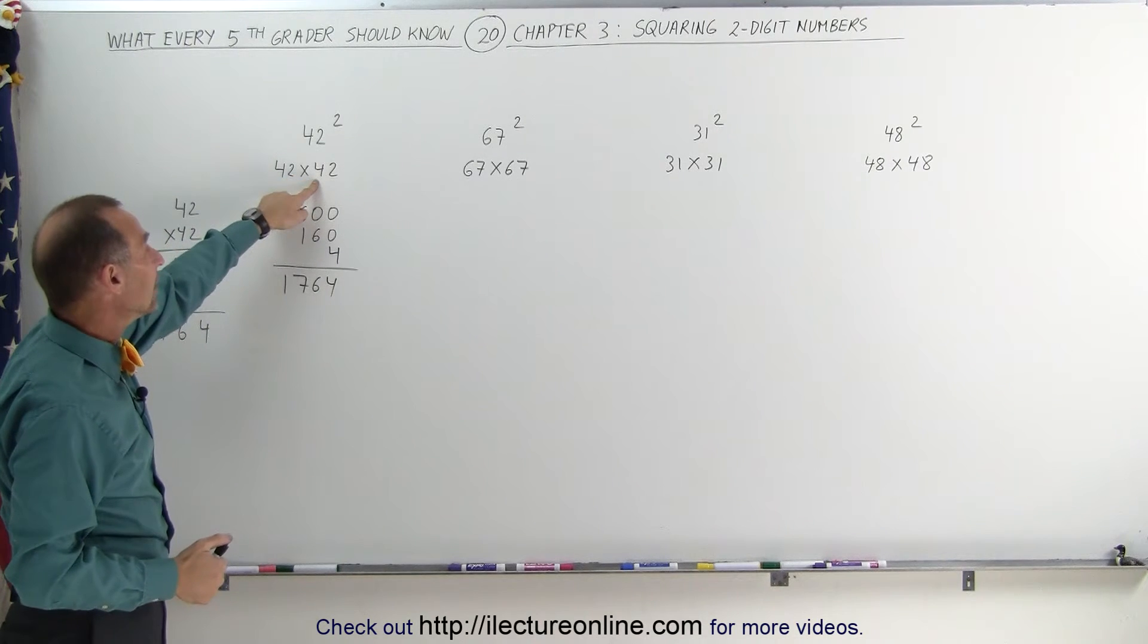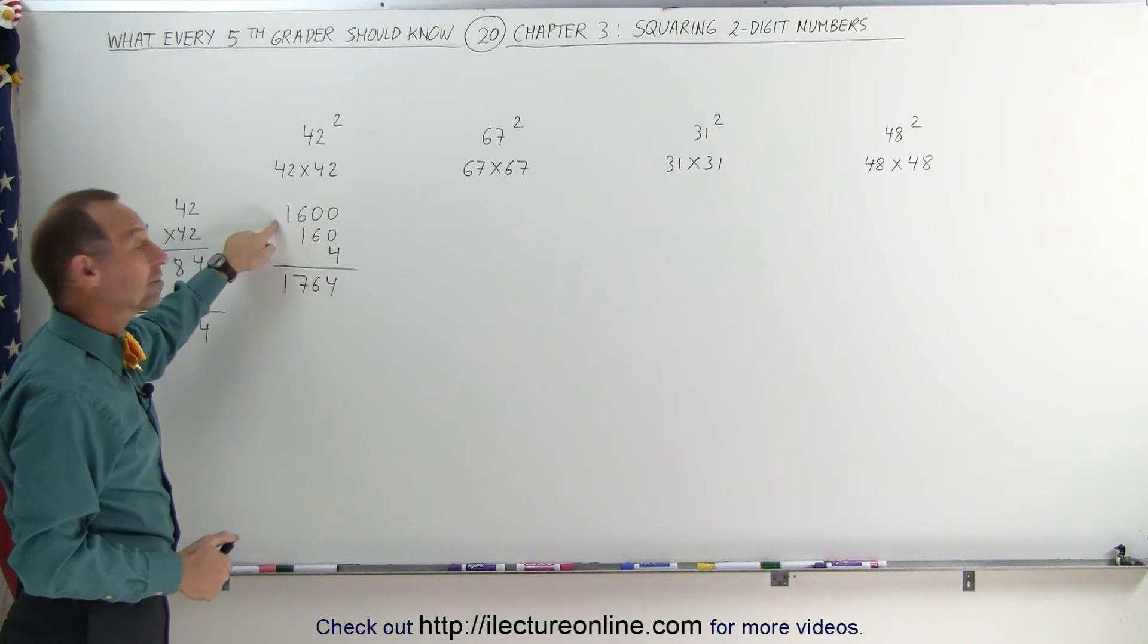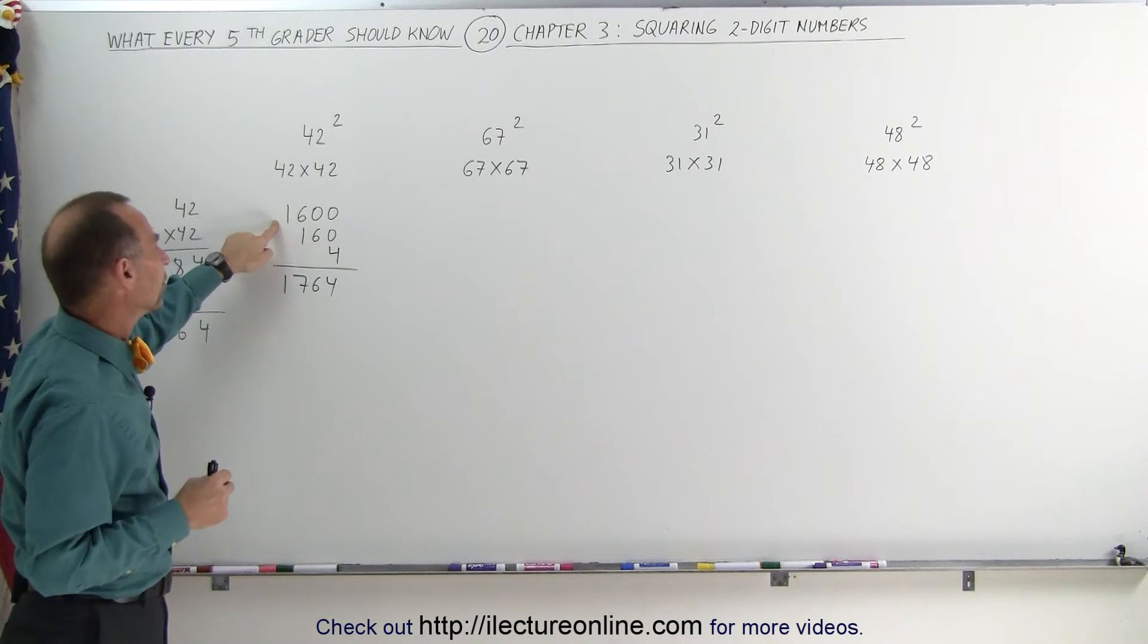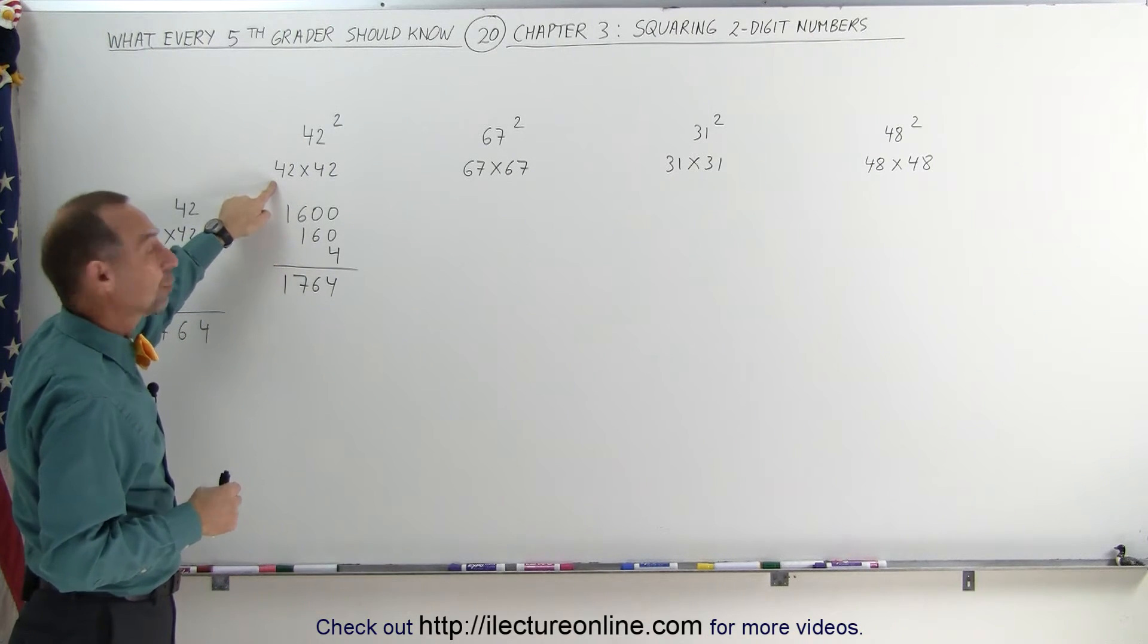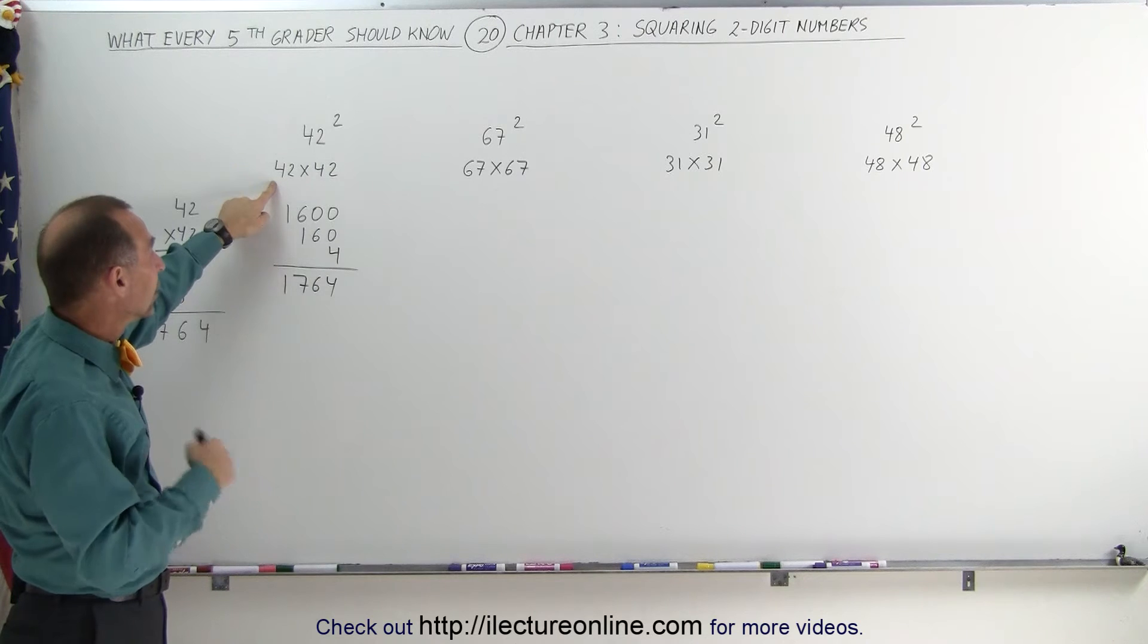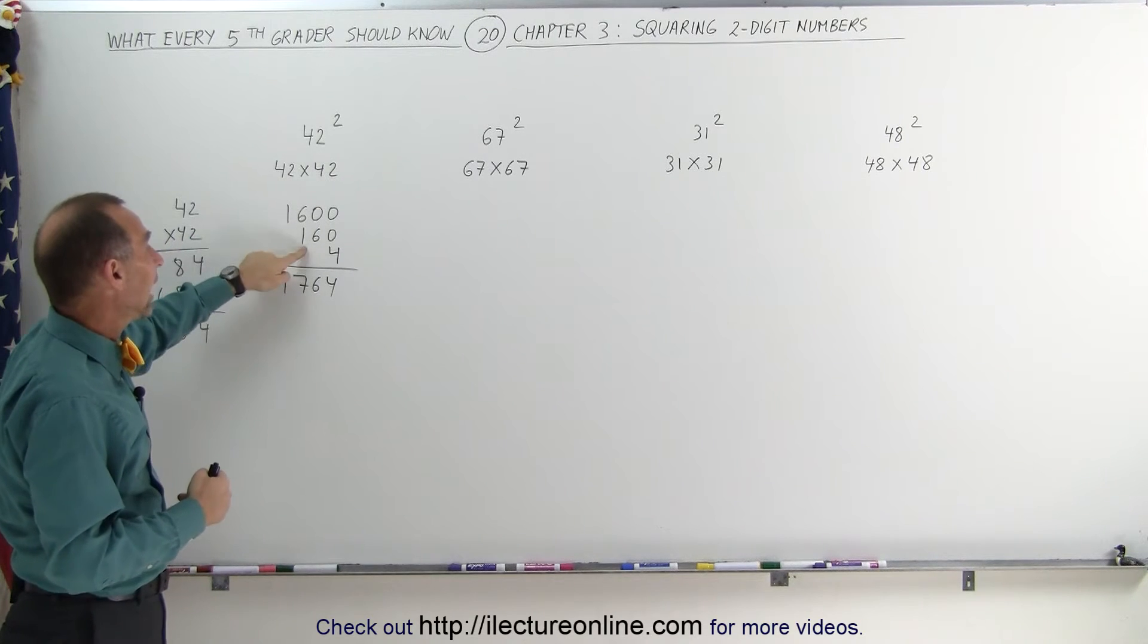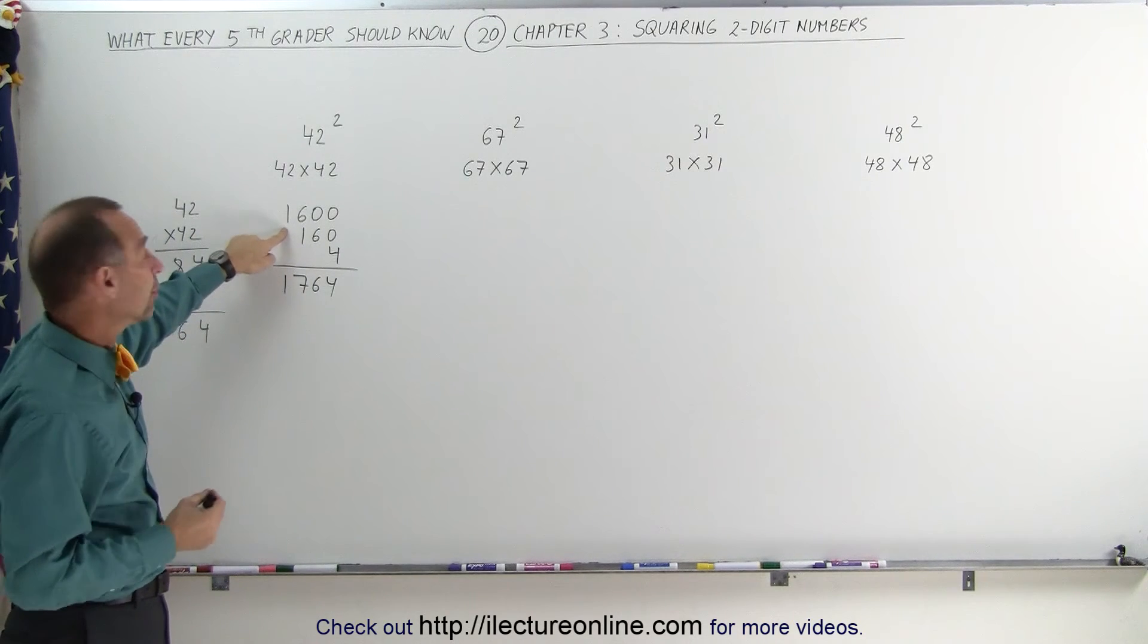So you go 4 times 4 is 16, add two zeros, so you get 1600. You remember 1600. Now you go 2 times 4, or 2 times 40, which is 80. Double that, you get 160.